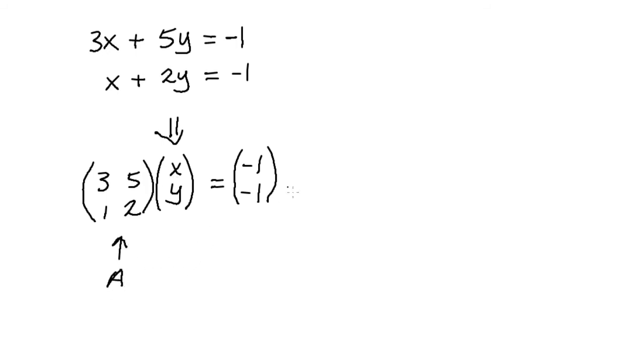This is the equivalent of A multiplied by (x; y). Since we know that the inverse of A is A to the minus 1 equals (2, minus 5; minus 1, 3),